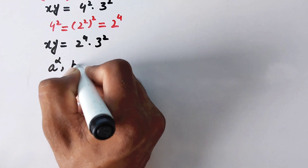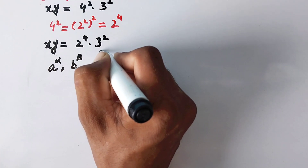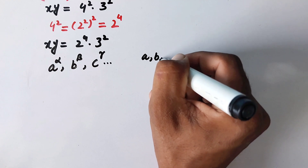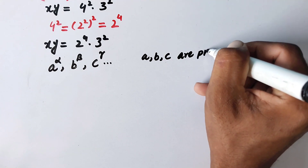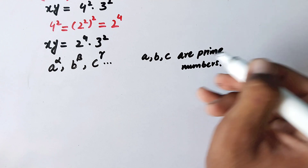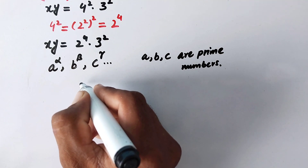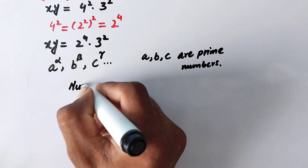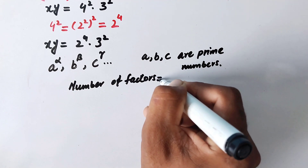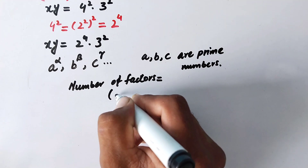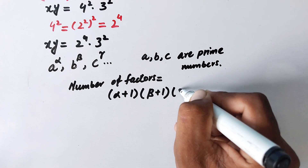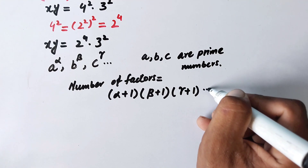Now here we can recall a rule: when a number is expressed as a to the power alpha, times b to the power beta, times c to the power gamma, and so on, where a, b, and c are prime numbers, the number of factors is equal to (alpha plus 1) times (beta plus 1) times (gamma plus 1), and so on.